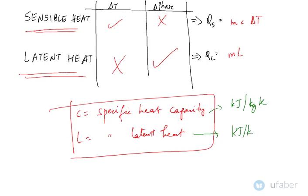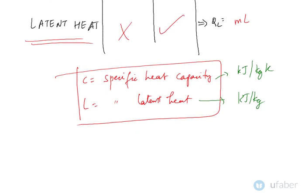Some important values for you to remember is that specific heat capacity for water is 4.2 kilojoule per kg Kelvin and latent heat capacity of ice is 335 kilojoule per kg.